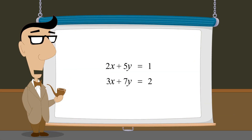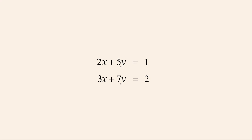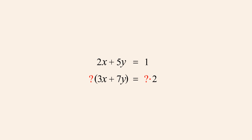When using the elimination method, it may sometimes be impossible to cancel terms by choosing an integer multiplier for only one of the equations. For example, in this system there is no integer multiplier which we can choose for the first equation which will result in an x-coefficient of negative 3 or a y-coefficient of negative 7 to cancel the coefficients of 3 or 7 in the second equation. Likewise, there is no integer multiplier for the second equation which will result in an x-coefficient of negative 2 or a y-coefficient of negative 5 to cancel the coefficients of 2 or 5 in the first equation. However, there are integer multipliers we can pick for both equations which will make either the x- or y-terms disappear when the equations are added.